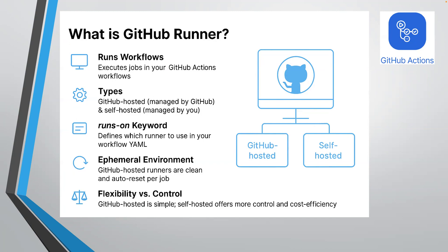GitHub Hosted Runners are completely ephemeral, meaning whenever you run your CI/CD workflow, GitHub provisions that VM on the fly, runs the entire build on that machine, and after that the machine is gone. Whenever the next build happens, the process is the same. How do you choose which runner you want? It is purely depending on your needs.